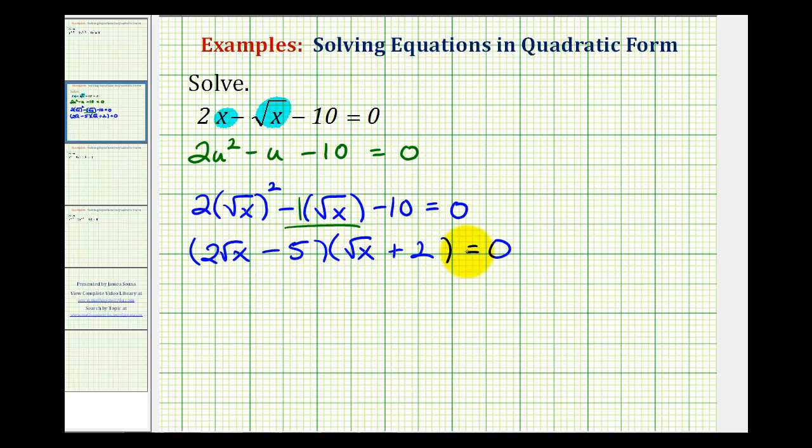This product is equal to zero when these factors are equal to zero. So now we'll solve the equation 2√x - 5 = 0 or √x + 2 = 0.